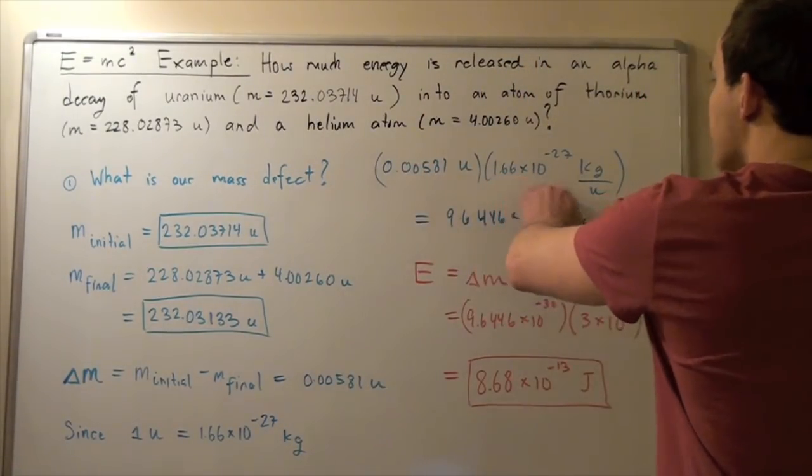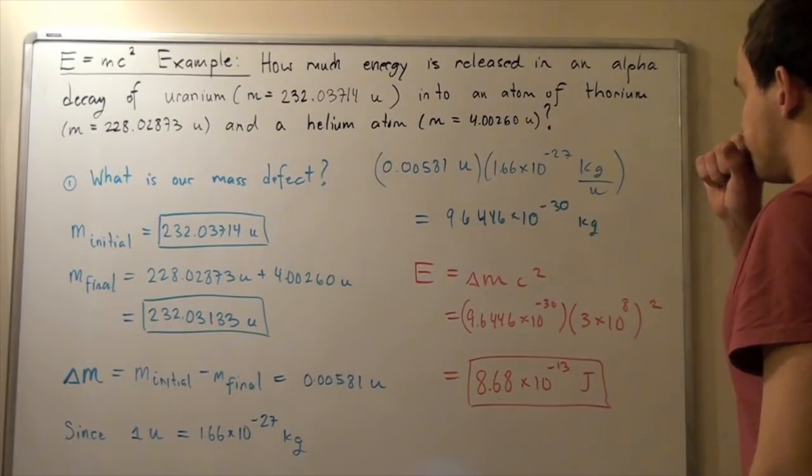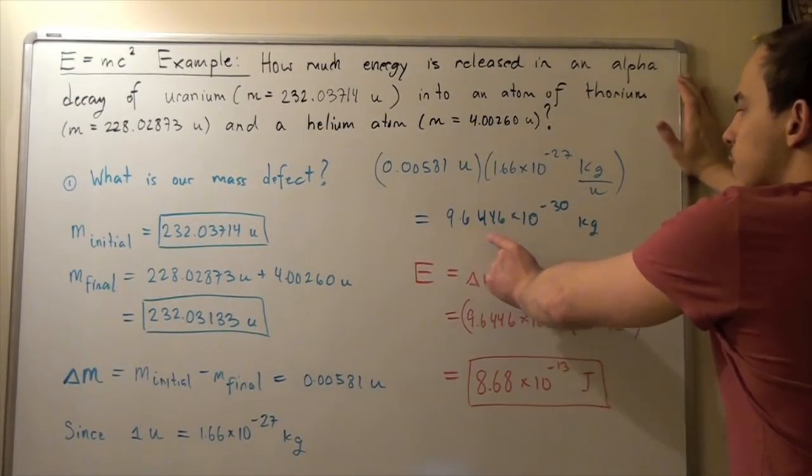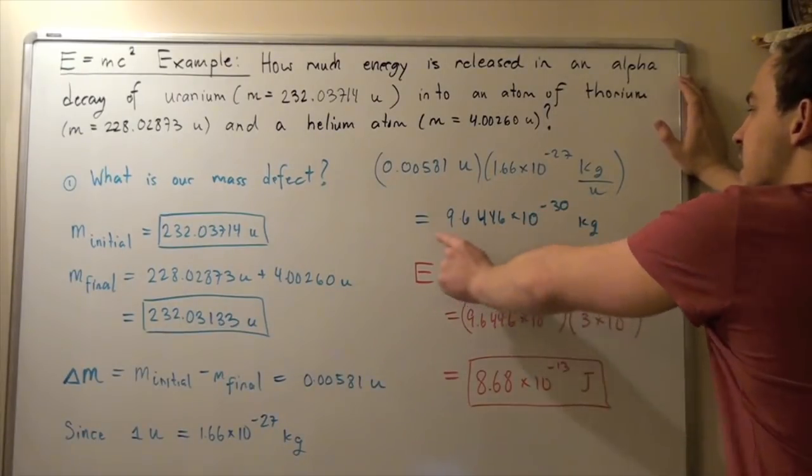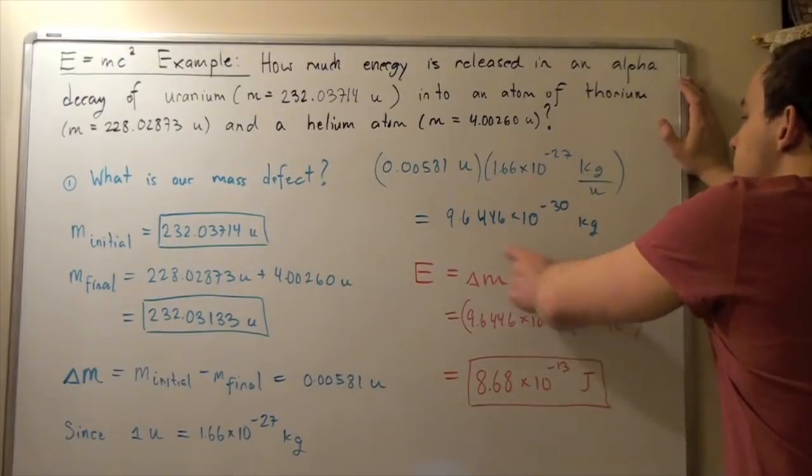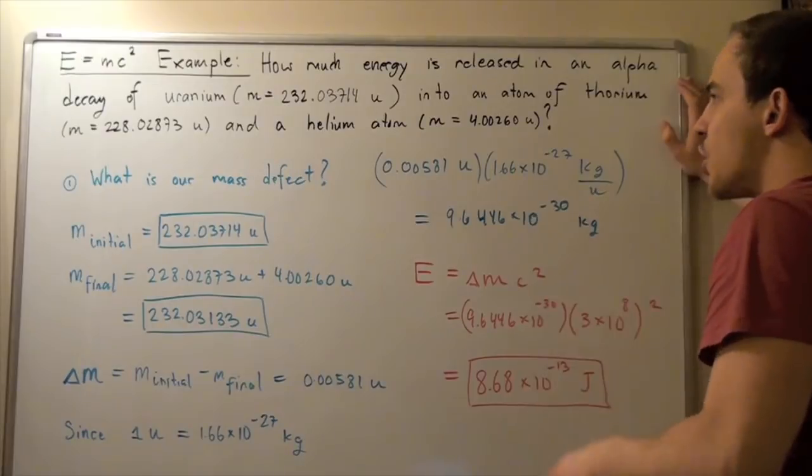The units cancel, and we are left with 9.6446 times 10 to the negative 30 kilograms. This is how much mass is lost, and this amount of mass is converted or transformed into energy.